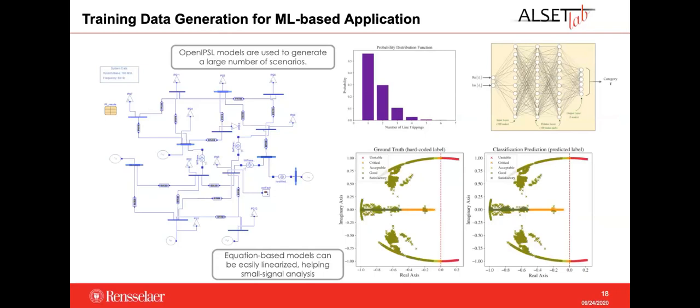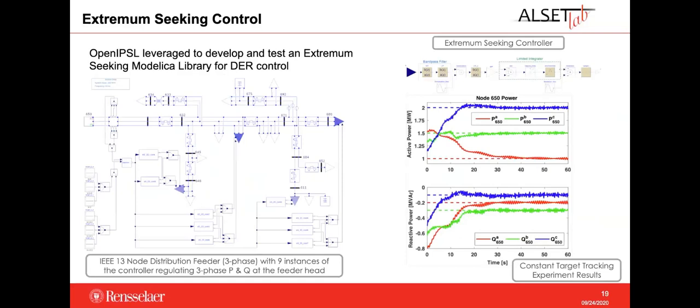In this last application, the three-phase models sub-package was used to create the IEEE 13-bus system — a distribution system containing many three-phase, two-phase, and one-phase loads, making it completely unbalanced. This network was used to test an extremum seeking controller that regulates P and Q for each phase at the feeder head. More results from this application are discussed in Maxim's publication at this very conference.